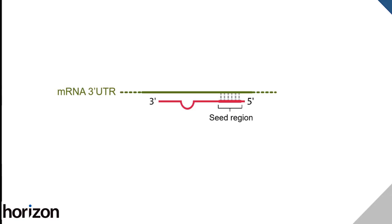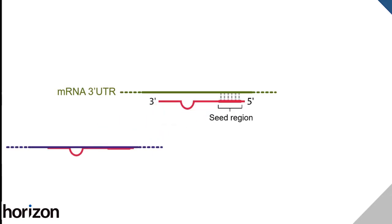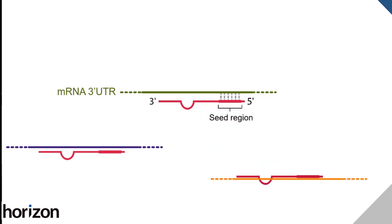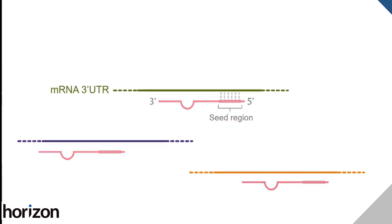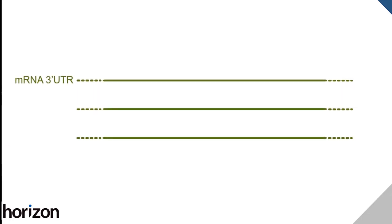The short length of the seed region means that each microRNA has multiple potential target genes, and each target gene may be regulated by multiple microRNAs. The effects of microRNA on gene expression tend to be subtle, like turning down the volume slightly on a radio.